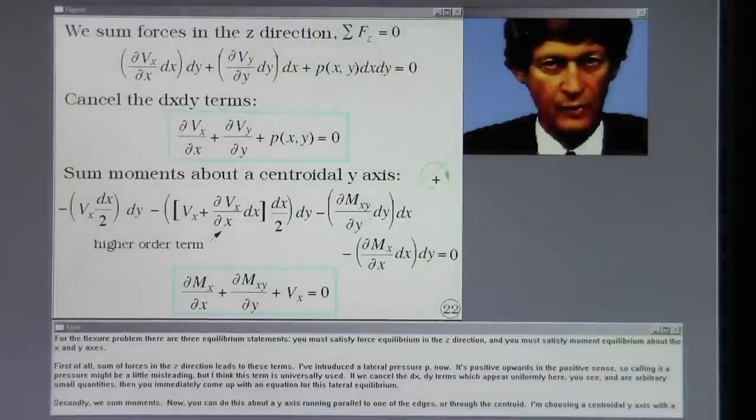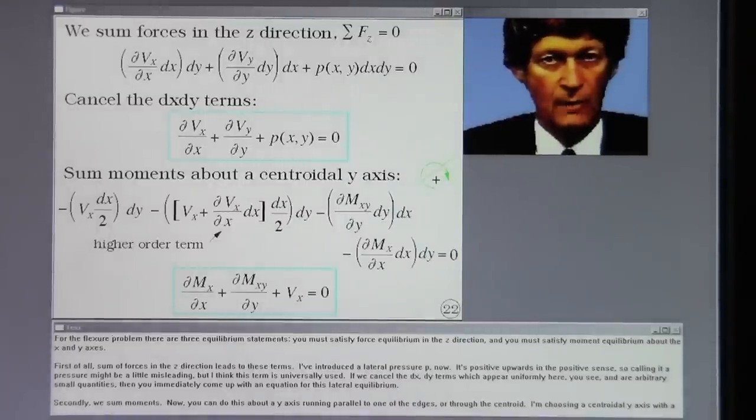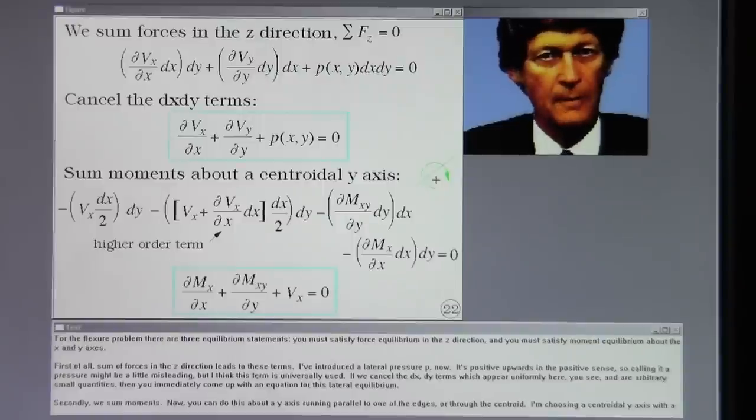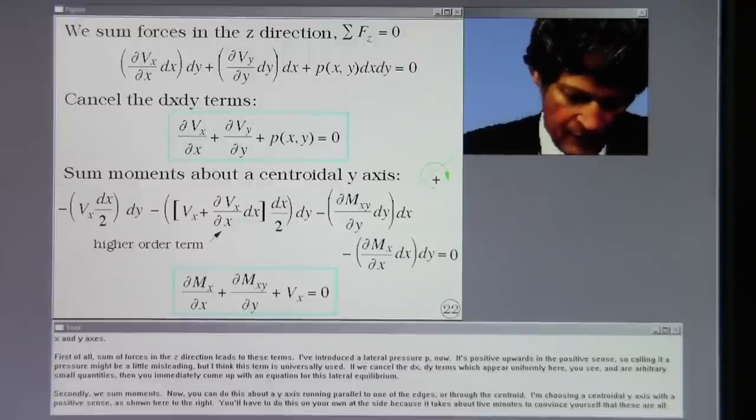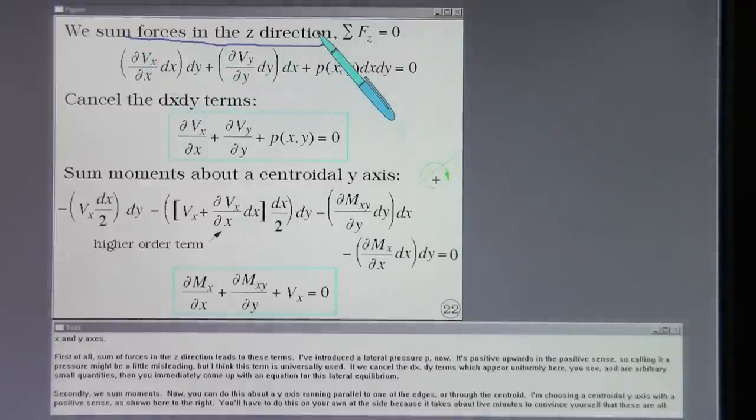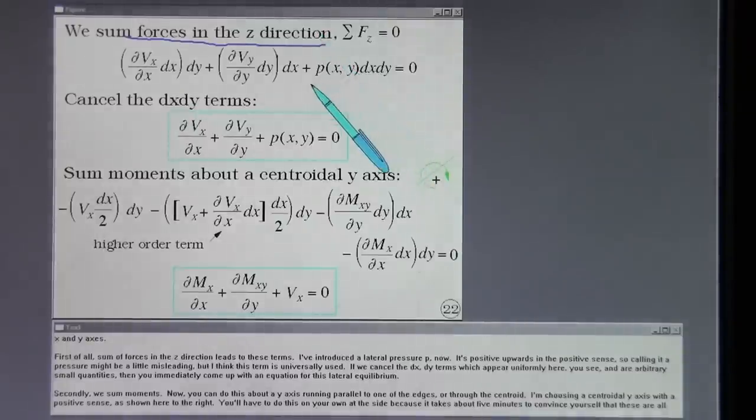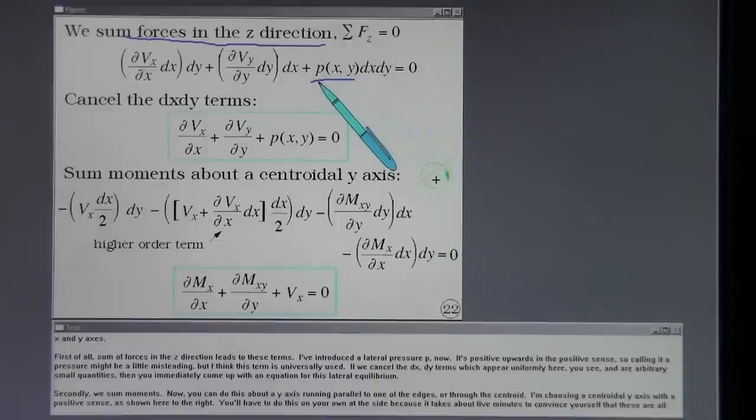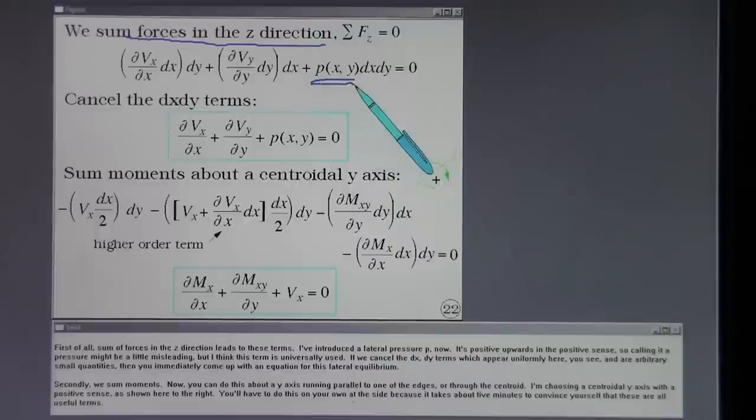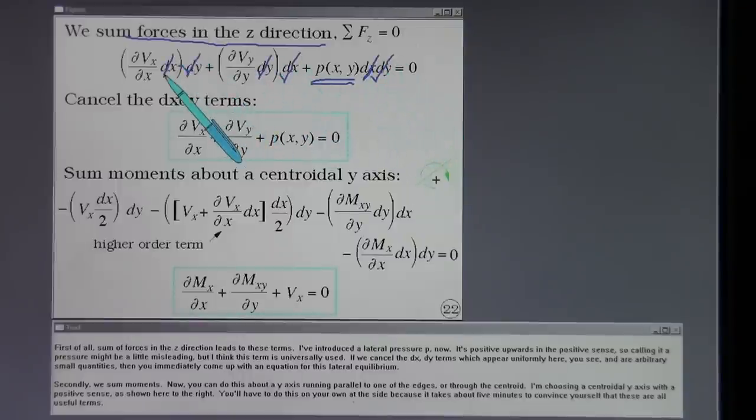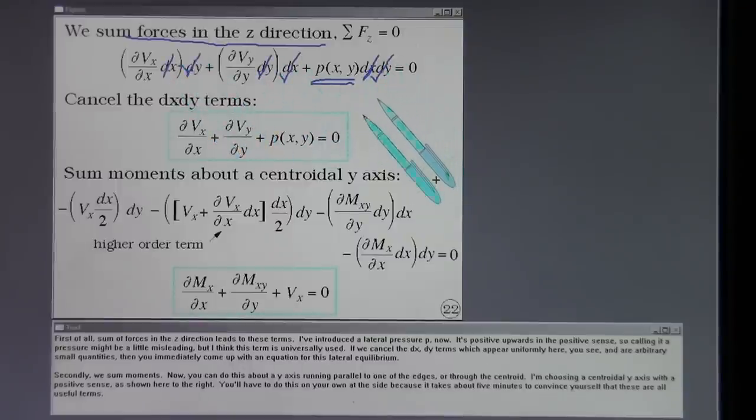For the flexure problem there are three equilibrium statements. You must satisfy force equilibrium in the z-direction and you must satisfy moment equilibrium about the x and y-axis. First of all, the sum of forces in the z-direction leads to these terms. I've introduced a lateral pressure, P, now. It's positive upwards in the positive sense and so calling it a pressure might be a little misleading but I think this term is universally used. If we cancel the dx dy term, these terms which appear uniformly here you see and are arbitrary small quantities, then you immediately come up with an equation for this lateral equilibrium.